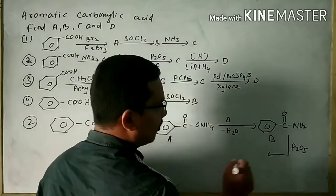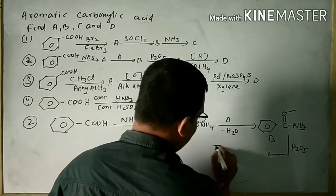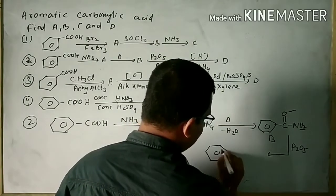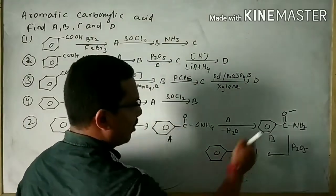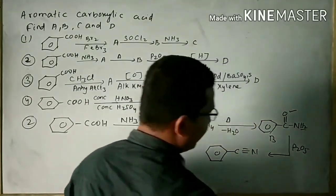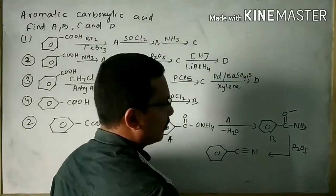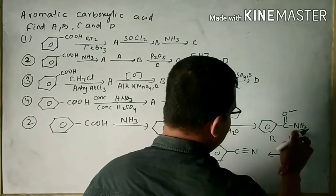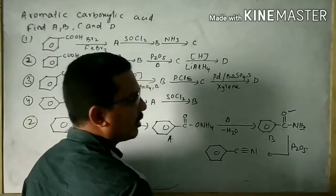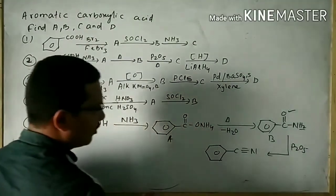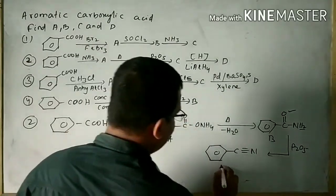For the water molecule, we need 2 hydrogen and 1 oxygen. As a result, we can write a C triple bond N. After loss of oxygen and 2 hydrogen, a triple bond is necessary. So we get a triple bond — that is your cyanobenzene, and it is considered as product C.